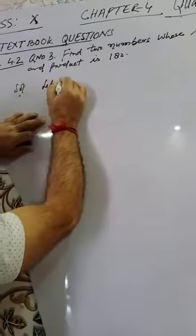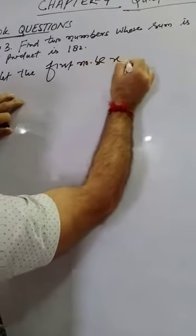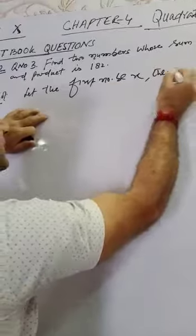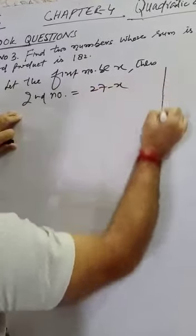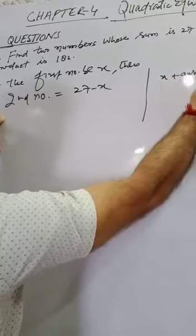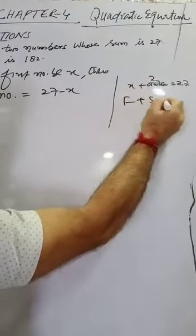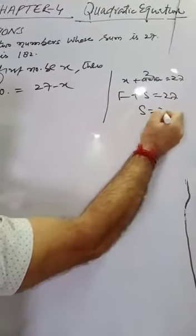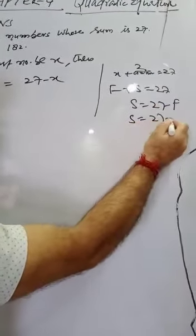Let the first number be x. Then the second number is equal to 27 minus x, because x plus another number equals 27. That is, first number plus second number equals 27, so the second number will be 27 minus first — that means second number is 27 minus x.